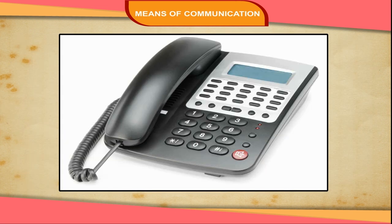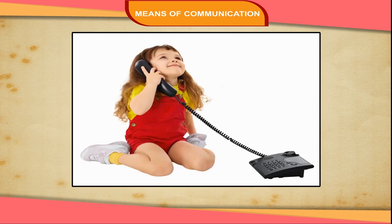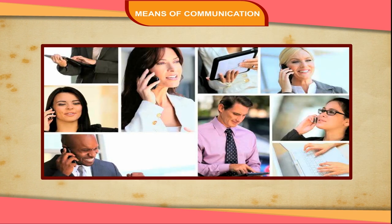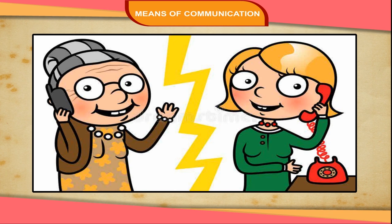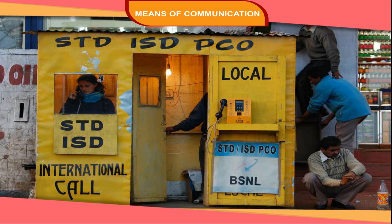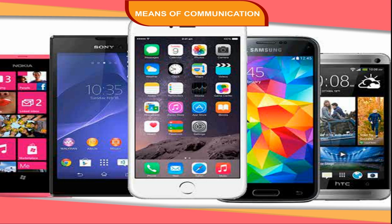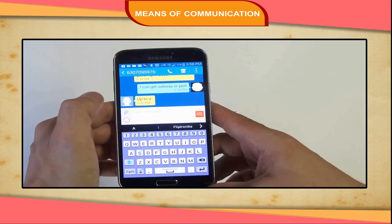Telephone: We can immediately send a message using a telephone. We can talk to our friends and relatives to give and receive messages over the telephone at the same time. We can talk to people living in our city, other cities and states or other countries over the telephone. To talk to people living in other cities and states, we use STD, subscriber trunk dialing. And to make international calls, we use ISD, international subscriber dialing. Now, mobile phones are also a very important means of communication. We can carry mobile phones everywhere and use them anytime.